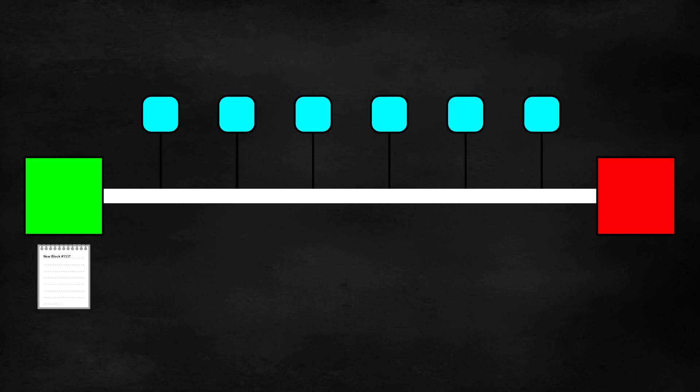Continuing with our paper analogy, you can see that when a new block is in the process of having transactions added to it, it can be represented by a blank piece of paper.